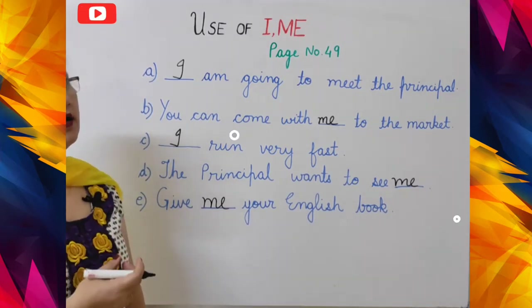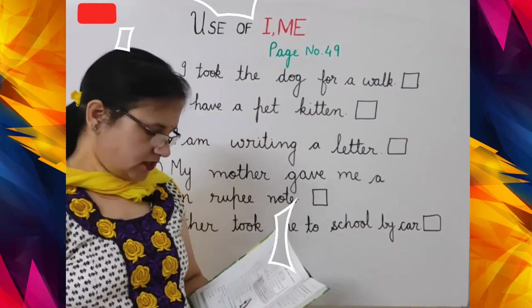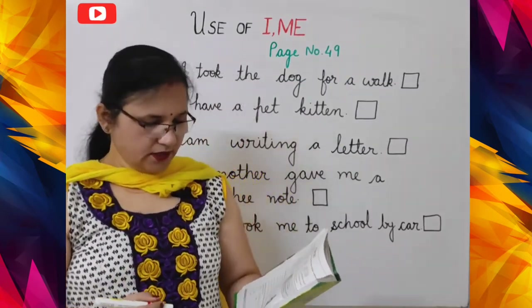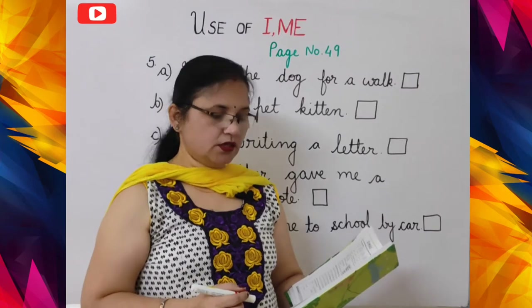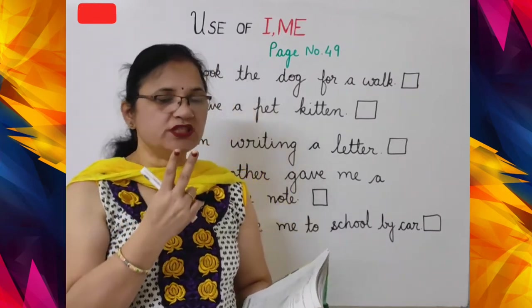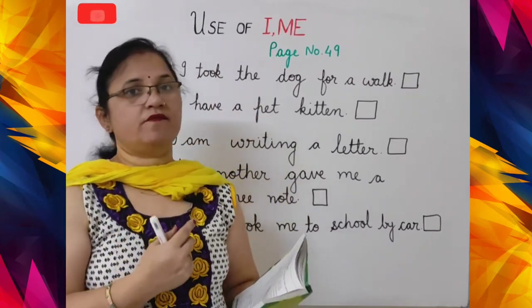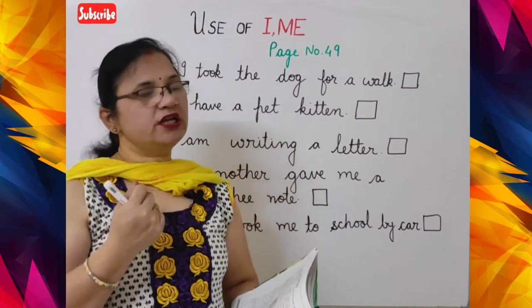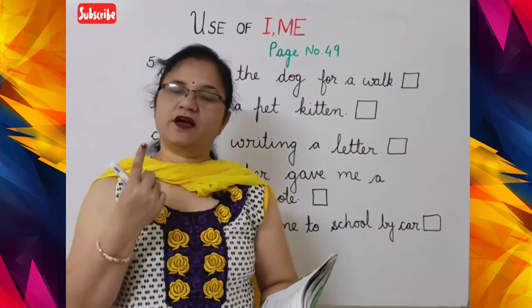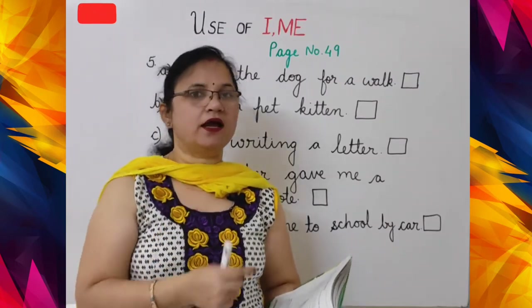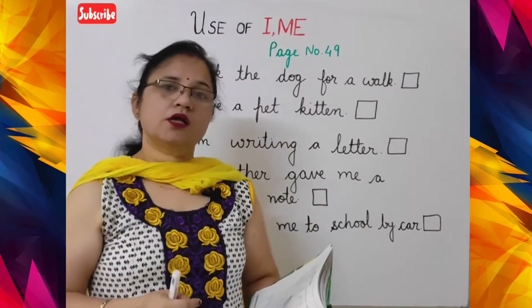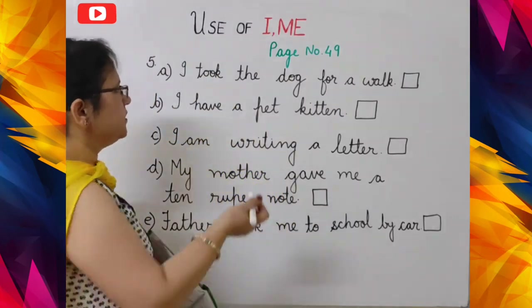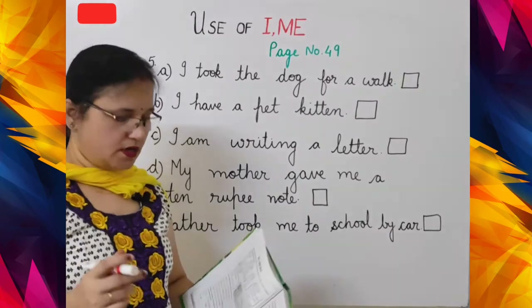Next exercise, students: take the correct sentence from the following pairs of sentences. Two sentences are given — one is right and the other one is wrong. So students let's do it. All the correct sentences are written here.